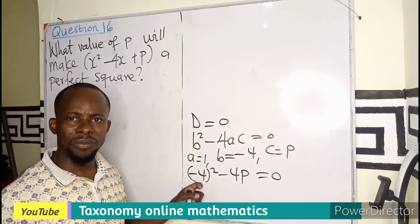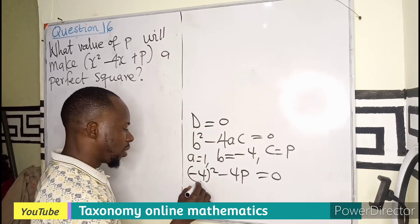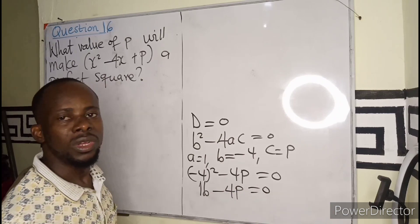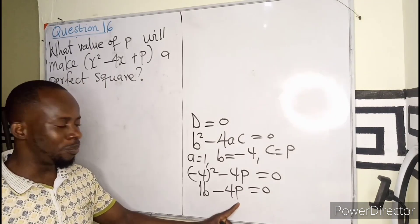And I believe negative 4 squared will give us positive 16 minus 4P equals to 0. We are looking for P.